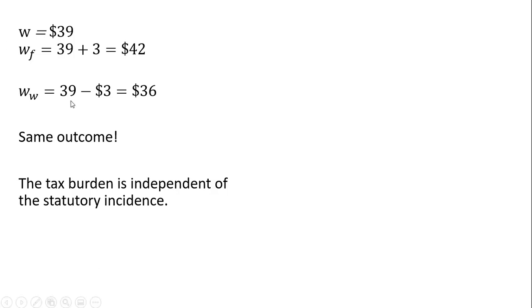As far as workers are concerned, they do receive $39 from the firm, but they're not done. They have to send $3 of that $39 to the government. And notice we get the same exact outcome as before, and this leads us to the profound conclusion that the tax burden is independent of the tax law, that's the statutory incidence.